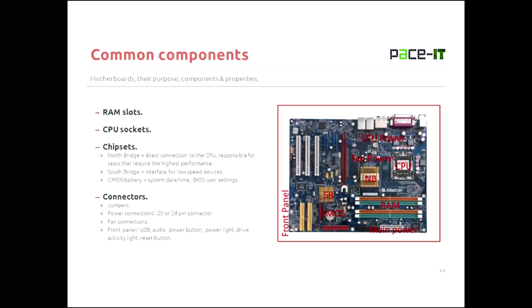Now we need to talk about CMOS — Complementary Metal Oxide Semiconductor. There's a lot of confusion about CMOS. The CMOS is actually the battery. The only things it's responsible for are keeping the system date and time, and ensuring that user settings changed in BIOS are maintained. It does that by supplying trickle power to the actual BIOS chip — the EEPROM. A lot of people say the BIOS is losing time, but it's not the BIOS, it's the CMOS losing time — usually a sign that the battery is about ready to go dead.